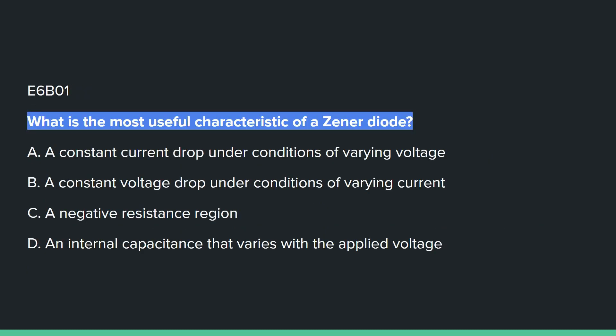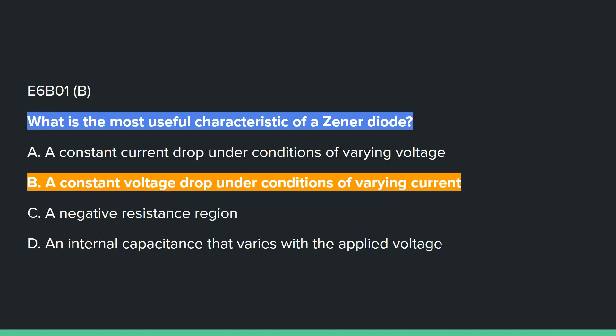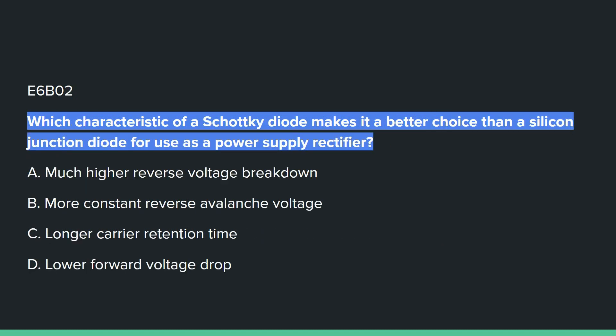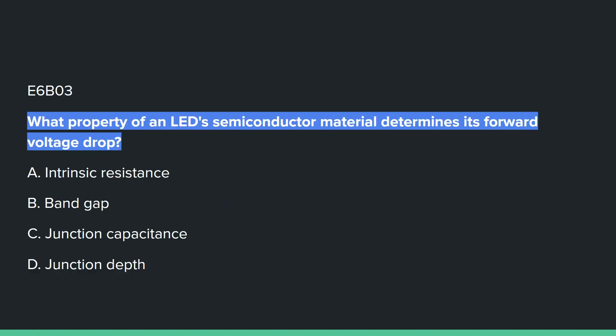E6B01: What is the most useful characteristic of a zener diode? B, constant voltage drop under conditions of varying current. E6B02: What characteristic of a Schottky diode makes it a better choice than a silicon junction diode for use as a power supply rectifier? D, lower forward voltage drop. E6B03: What property of an LED's semiconductor material determines its forward voltage drop? B, band gap.